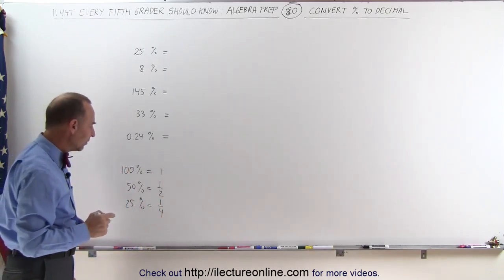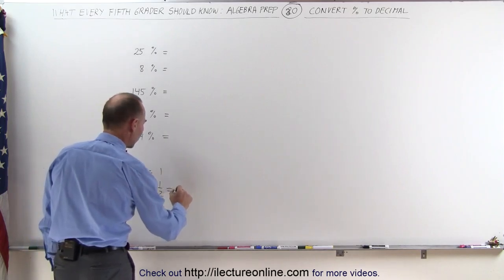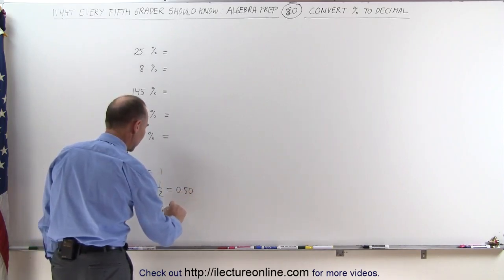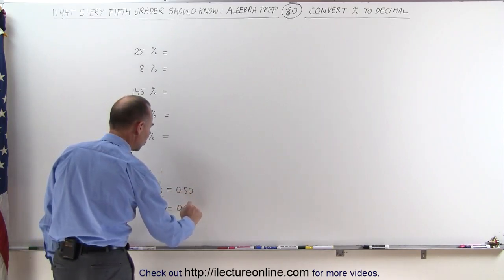What that means is because a half can be written as 0.50 and a quarter can be written as 0.25,